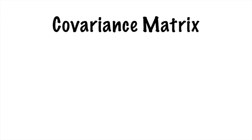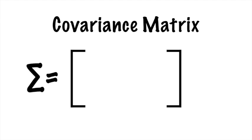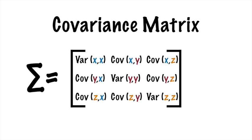Now, we can create what's called a covariance matrix, also denoted by sigma. A covariance matrix has the variances along the diagonal, and the covariances fill the rest of the entries. This matrix is special because its eigenvalues and eigenvectors describe a full multidimensional dataset.